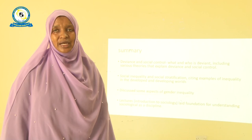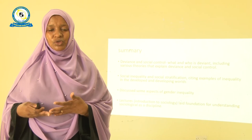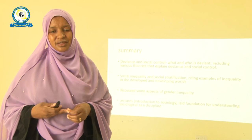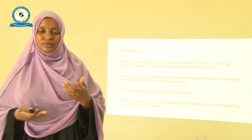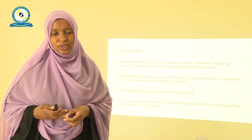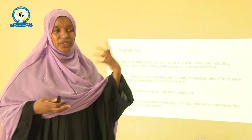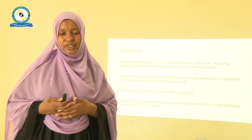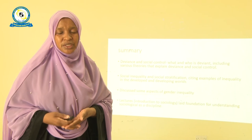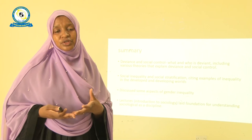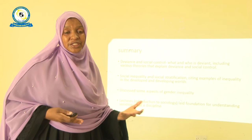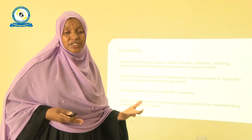In summary, in this lecture we have talked about deviance, social control, and social inequality. We've seen what deviance is, who is considered deviant, and some of the theories used to explain deviance in society. We also discussed social inequality and social stratification, citing examples from both developing and developed worlds, and discussed gender inequality. I hope these introductory lectures have been able to lay a foundation for understanding other branches of sociology, as this has been an introduction to a subject that is really wide, looking at many aspects of social life and human development. Thank you for your attention.